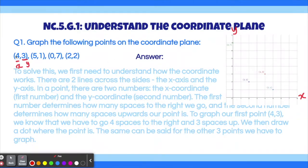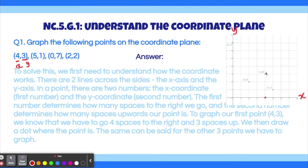The x-coordinate, which here is 4, determines how many steps left or right we need to go. So if we have positive 4, that means we go right 4 steps: 1, 2, 3, and 4. That is where our x position is for the first point. Now the second number is the y-coordinate, which is 3 for this point. The y-coordinate determines how far up or down we go. So positive 3 means we go up three spaces: 1, 2, and 3. And we have our first coordinate point.